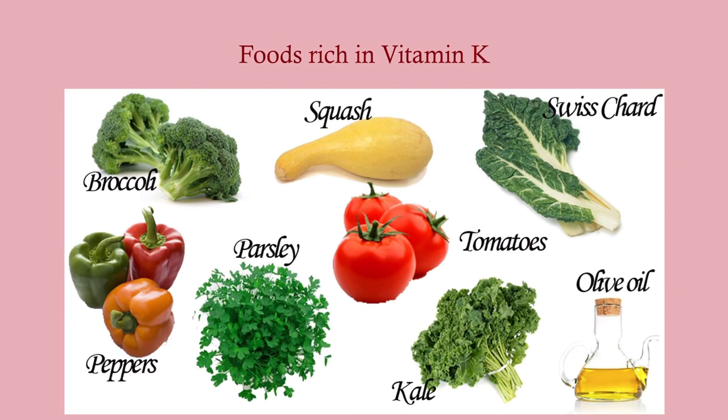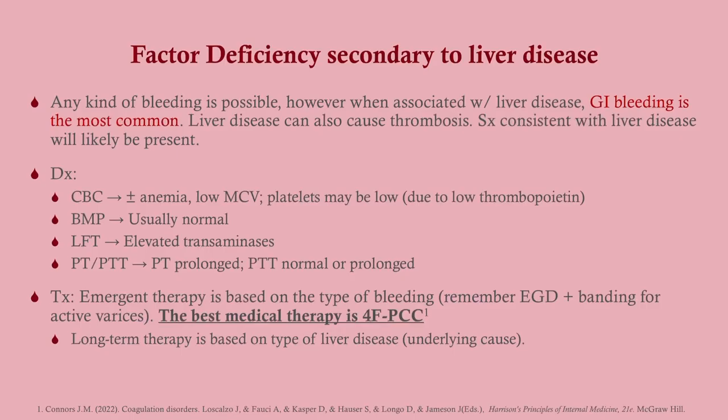Foods rich in vitamin K include many vegetables and leafy greens. Moving to factor deficiency secondary to liver disease — here we're talking about factors 2, 5, 7, and 10. This is most associated with GI bleeding, especially varices. The reason is that varices are generally associated with cirrhosis, and most of these patients do indeed have cirrhosis.